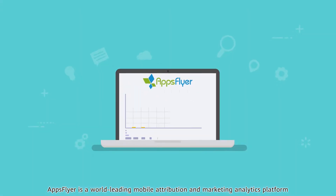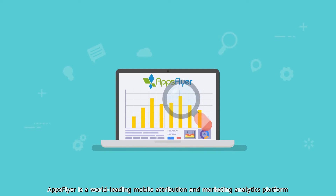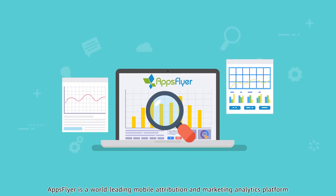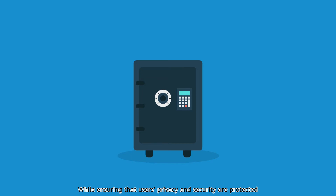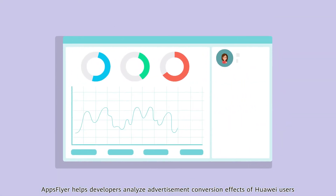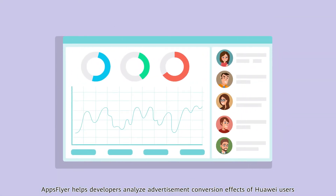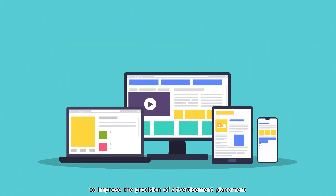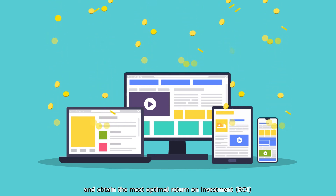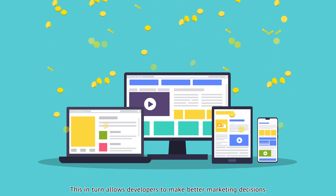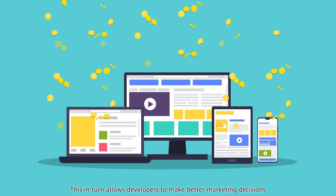AppsFlyer is a world-leading mobile attribution and marketing analytics platform. While ensuring that users' privacy and security are protected, AppsFlyer helps developers analyze advertisement conversion effects of Huawei users, to improve the precision of advertisement placement and obtain the most optimal return on investment, ROI. This, in turn, allows developers to make better marketing decisions.